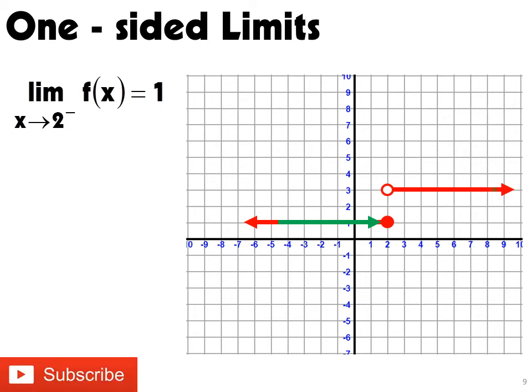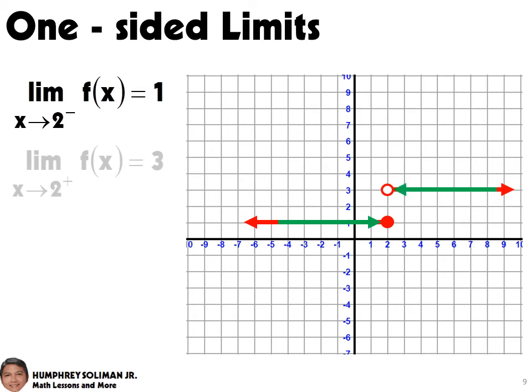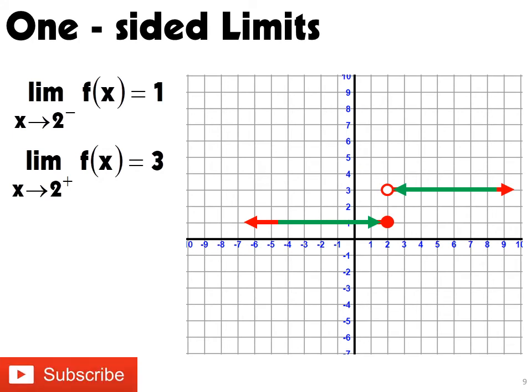And if we will trace the graph from the right towards x equals 2, we can see that f of x is equal to 3. This is the limit of the function as x approaches 2 from the right, as indicated by the positive sign beside the 2.